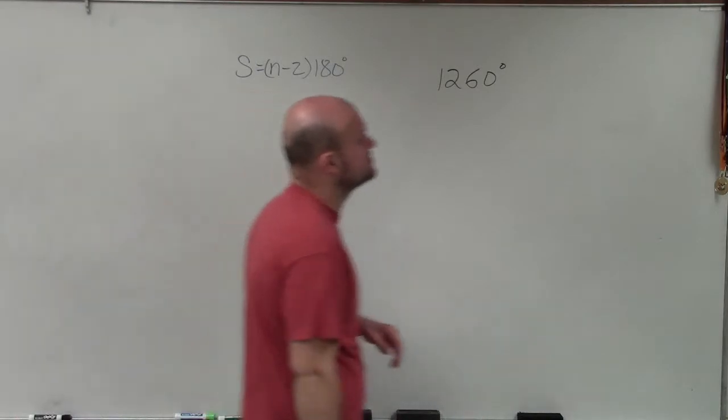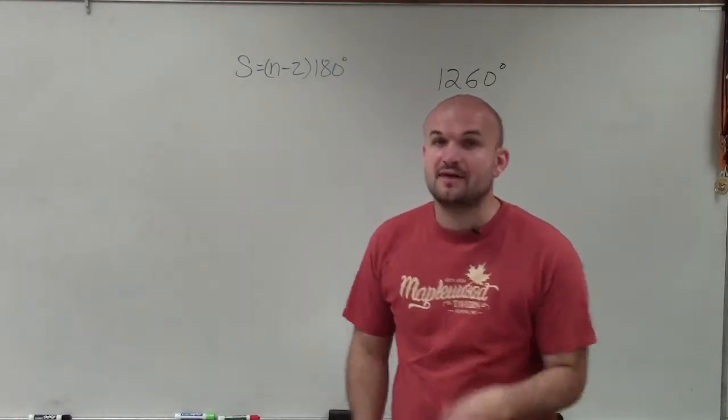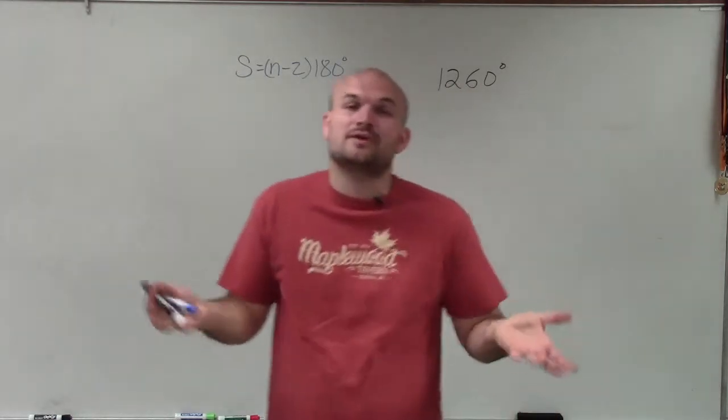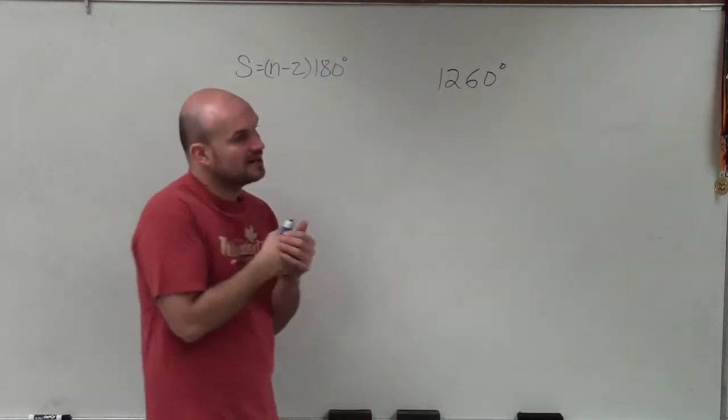Welcome. All right, so what I have here is 1,260 degrees. And that is going to be the sum of the measures of my interior angles of a polygon. But the thing is, I don't know the number of sides. So that's what I want to solve for.